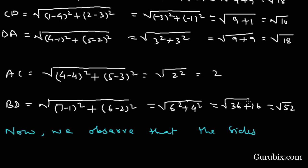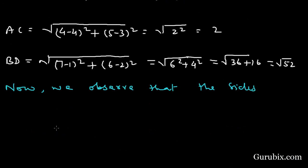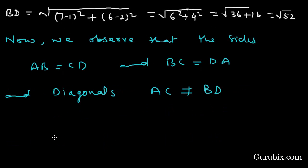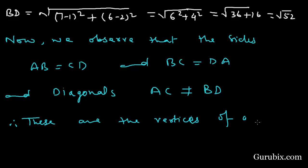We observe that sides AB = CD = √10 and BC = DA = √18, but the diagonals AC ≠ BD. Therefore these are the vertices of a parallelogram. This is the solution of the question. Thank you.